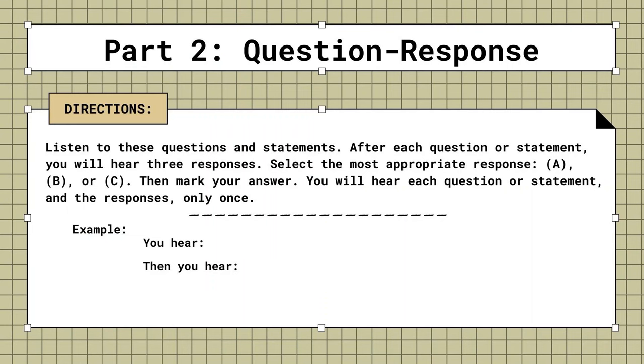Part 2. Try It Out. Directions: Listen to these questions and statements. After each question or statement, you will hear three responses. Select the most appropriate response, A, B, or C. Then, mark your answer.